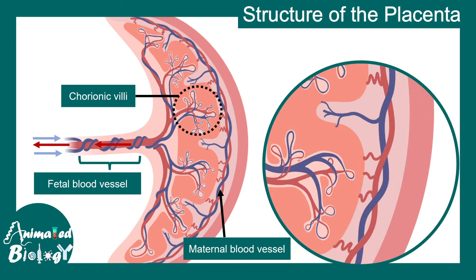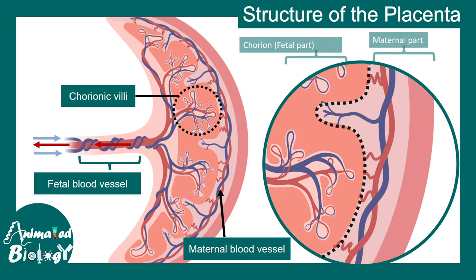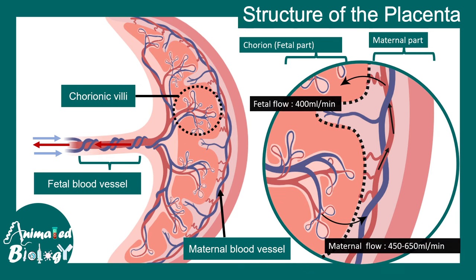Let's look at the chorionic villi in a zoomed view. Here you can see the line demarked — the left side is the fetal part, the right side is the maternal part. You can see the maternal blood circulation, with arrows indicating how maternal blood moves into the fetal circulation and how blood from the fetus enters the maternal circulation and gets filtered. The fetal flow rate is 400 milliliters per minute, whereas maternal flow is 450 ml per minute.